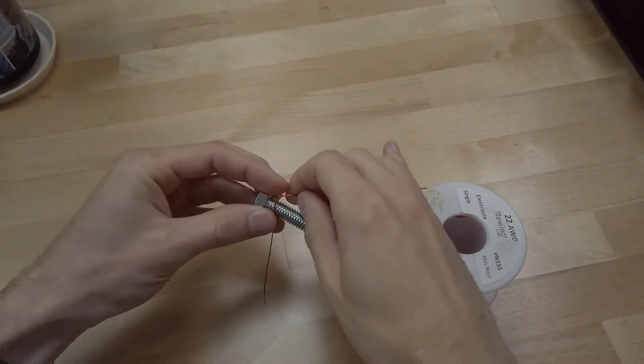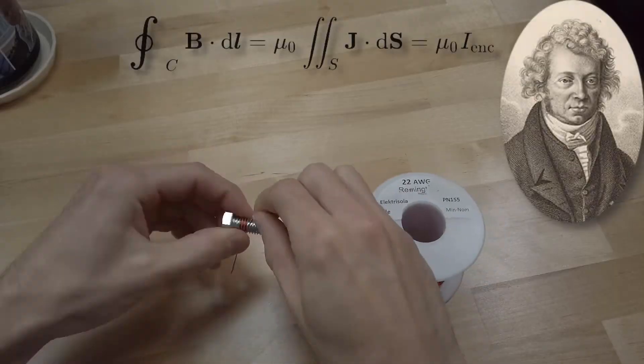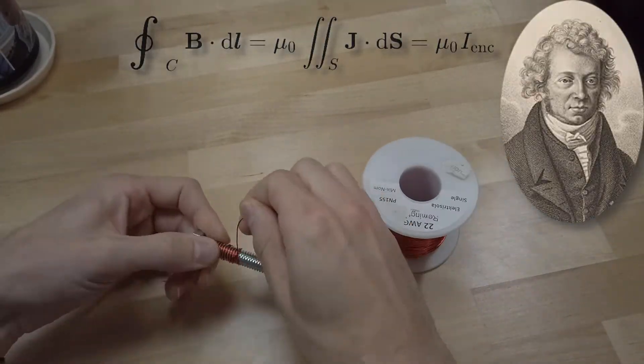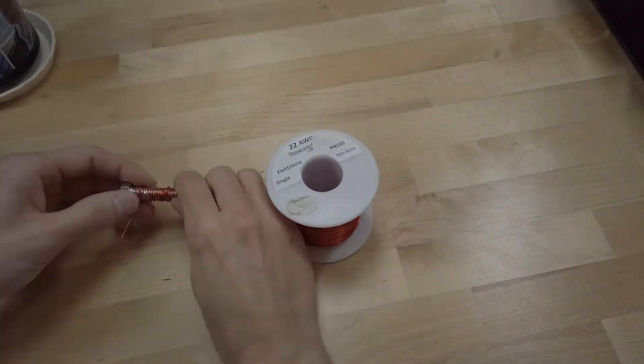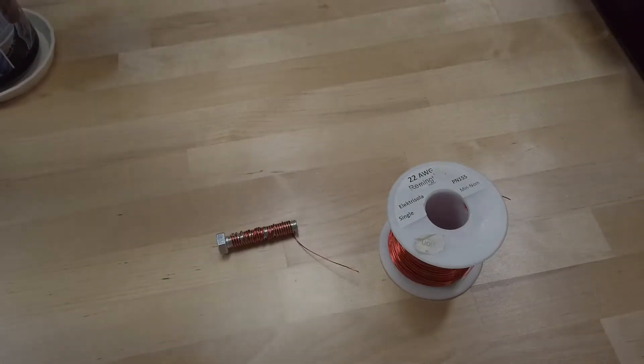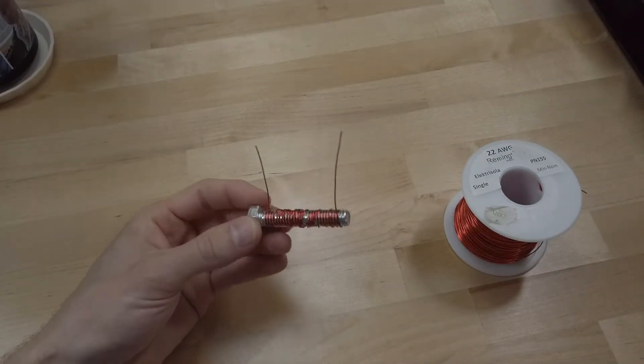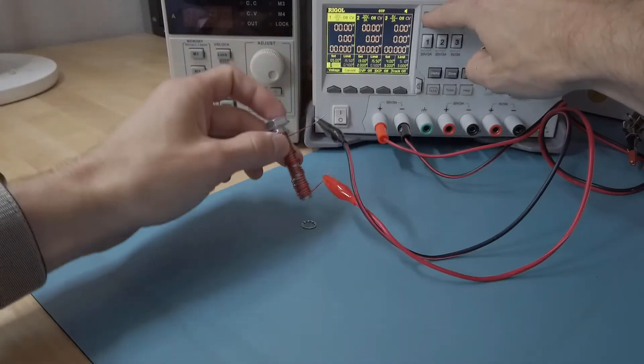There are a few concepts in electromagnetism that are fundamental to understanding Tesla coils. One of these concepts is Ampere's law. To demonstrate Ampere's law we'll start by winding some magnet wire around a bolt. Ampere's law states that the magnetic field around a wire is proportional to the current flowing through the wire.